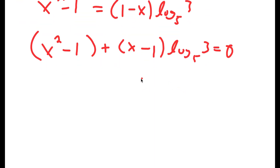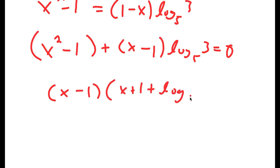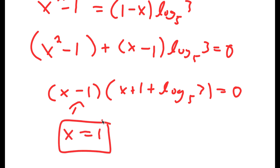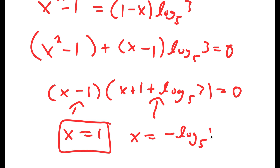This factors to x minus 1 times x plus 1 plus log base 5 of 3 is equal to 0. So one solution is x minus 1 equals 0, meaning x is equal to 1. And solving the other factor gives x is equal to negative log base 5 of 15.